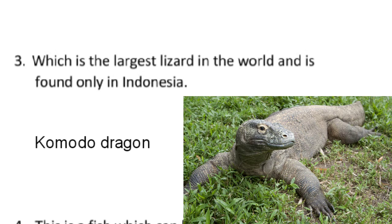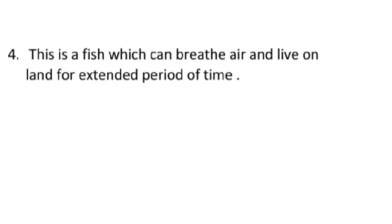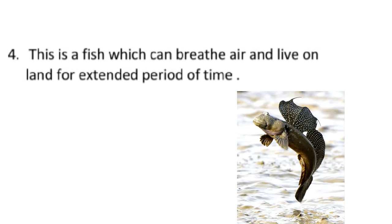Now question number 4: this is a fish which can breathe air and live on land for an extended period of time. It is mudskipper, a fish with eyes on raised bumps on the top of the head, found in mangrove swamps from East Africa to Australia. They are amphibious fish. So you will write here mudskipper.